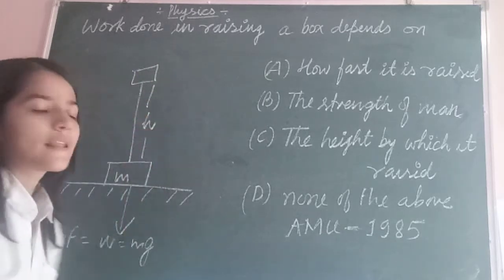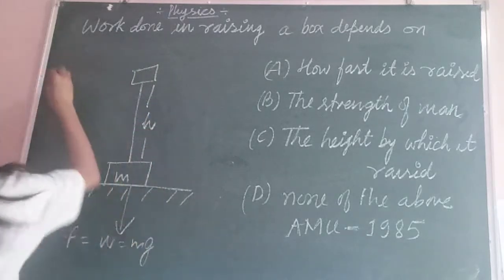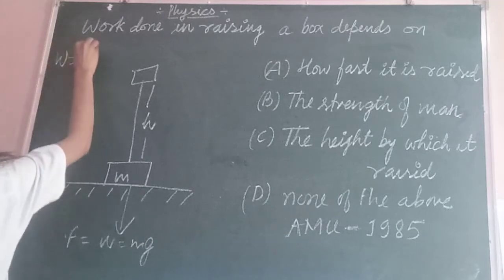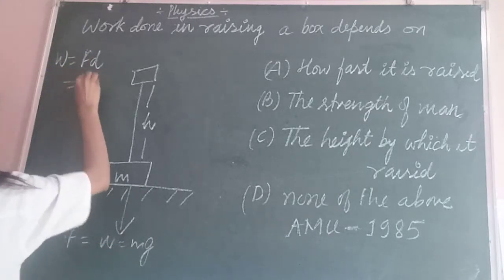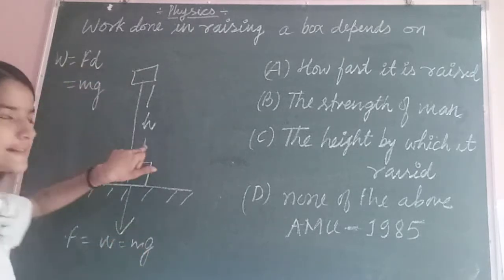Here F is Mg and d is h, so work equals F times d which equals mgh.